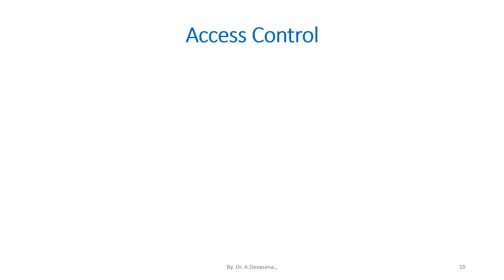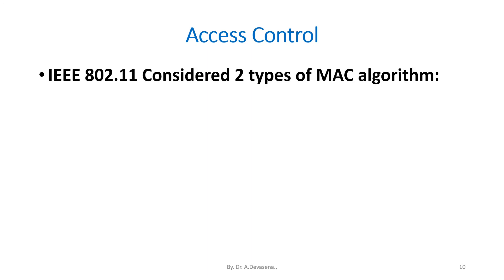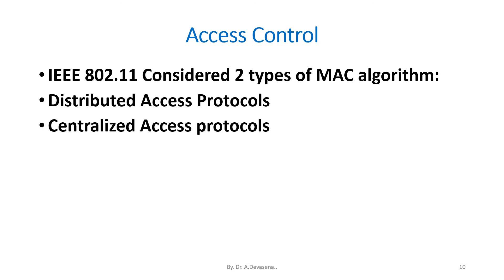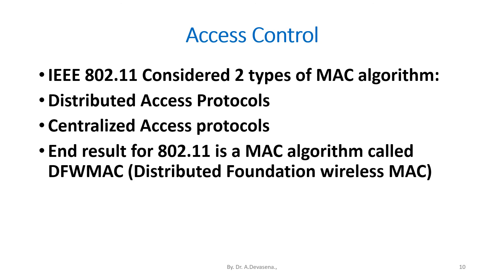Access control: IEEE 802.11 considers two types of MAC algorithm — distributed access protocols and centralized access protocols. The end result for 802.11 is a MAC algorithm called DFWMAC.